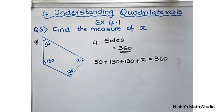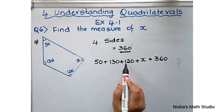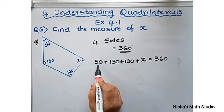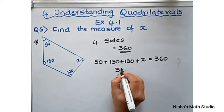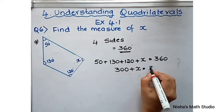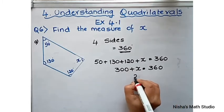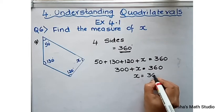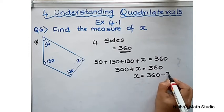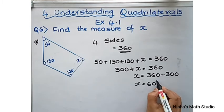Now we will write an algebraic equation. 130 plus 120 gives 250. 250 plus 50 gives 300. So 300 plus x equals 360. Solving: x equals 360 minus 300. So the value of x is 60 degrees.